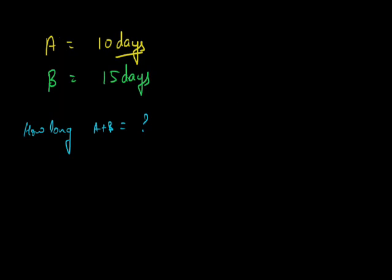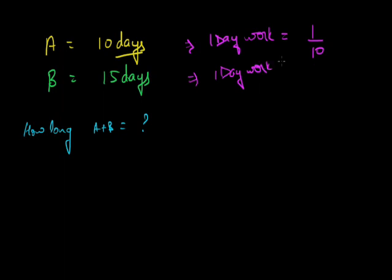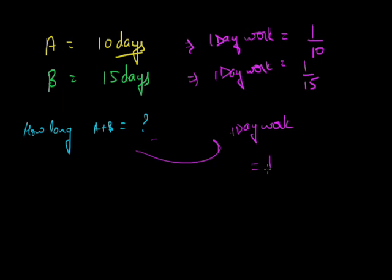Again, it is a simple approach. A can do the work in 10 days, which means in one day, the work done by A is 1/10 — one-tenth of the work is done in one day. Similarly for B, one day work is 1/15. Now, in one day A does 1/10 of the work and B does 1/15. If A and B work simultaneously, then their combined one day work would be the sum: 1/10 plus 1/15.